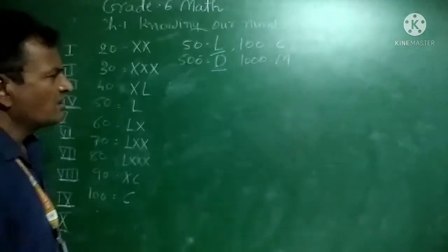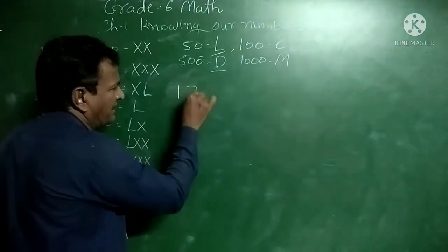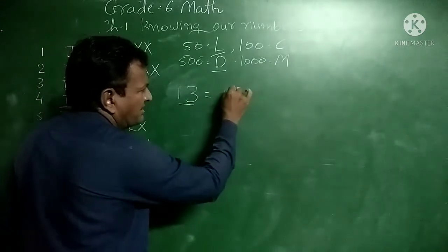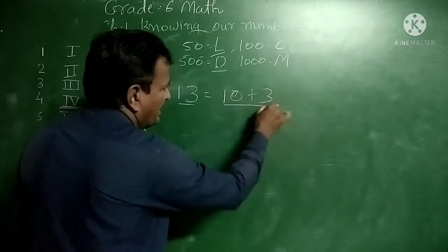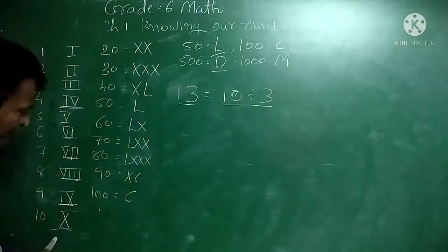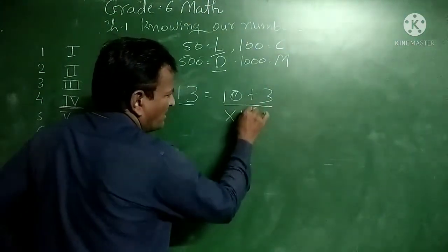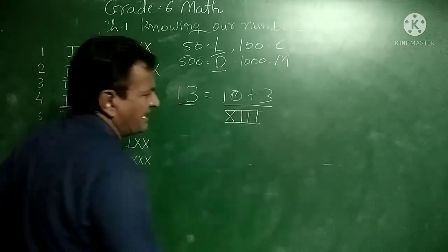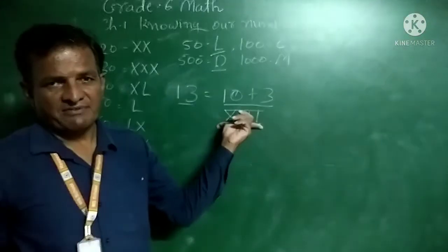First example: how do we write 13? We write 13 as 10 plus 3. The symbol for 10 is X, and for 3 we write three standing lines (III). So 13 in Roman numerals is XIII.